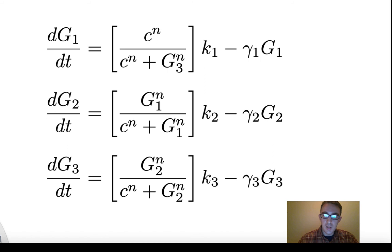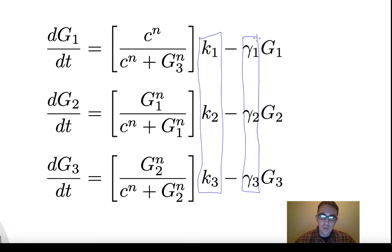The K terms here are just the maximum production terms for each gene, and then we have our gamma degradation terms. These are pretty straightforward. The degradation is multiplied by the level of the gene itself.